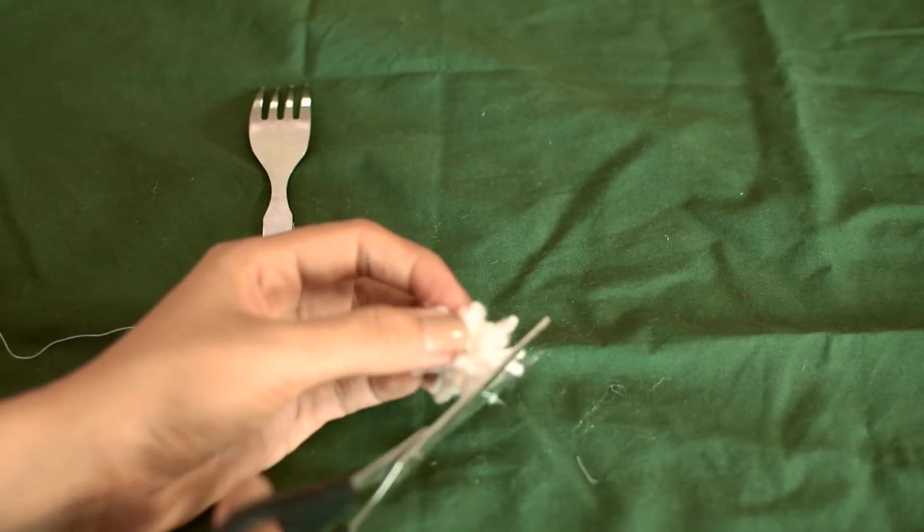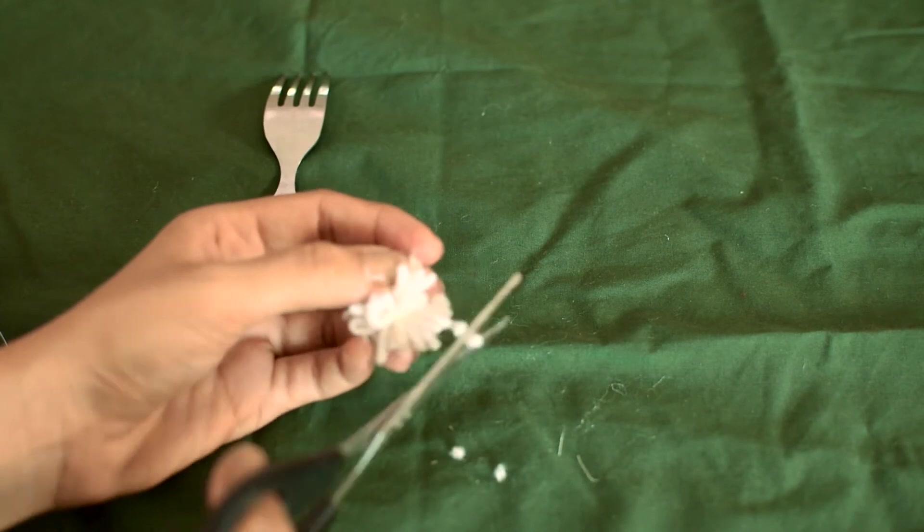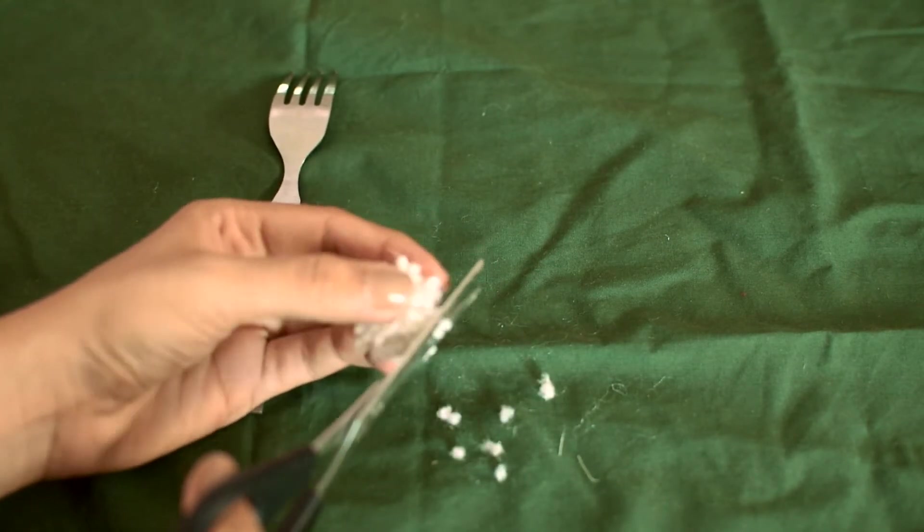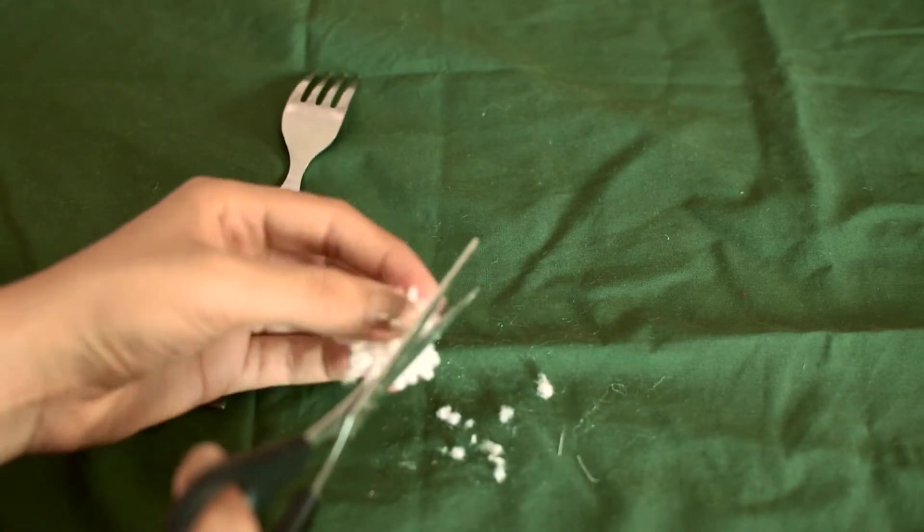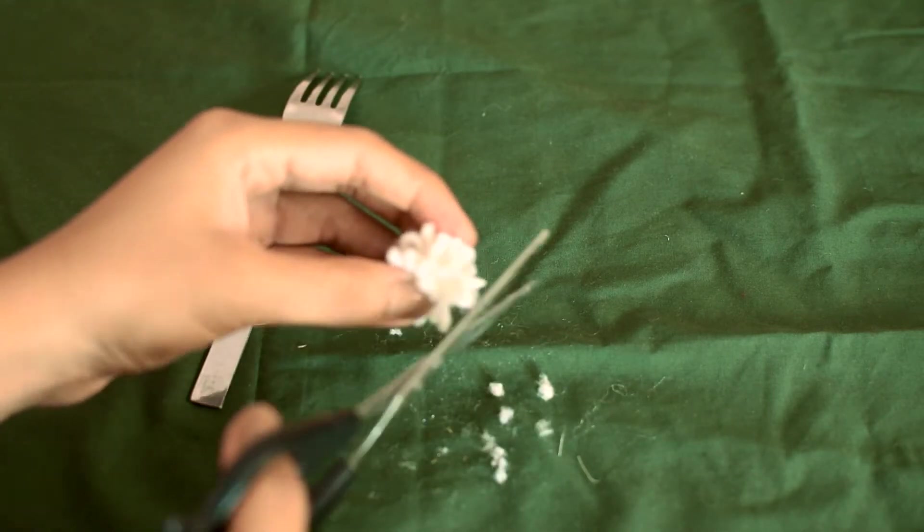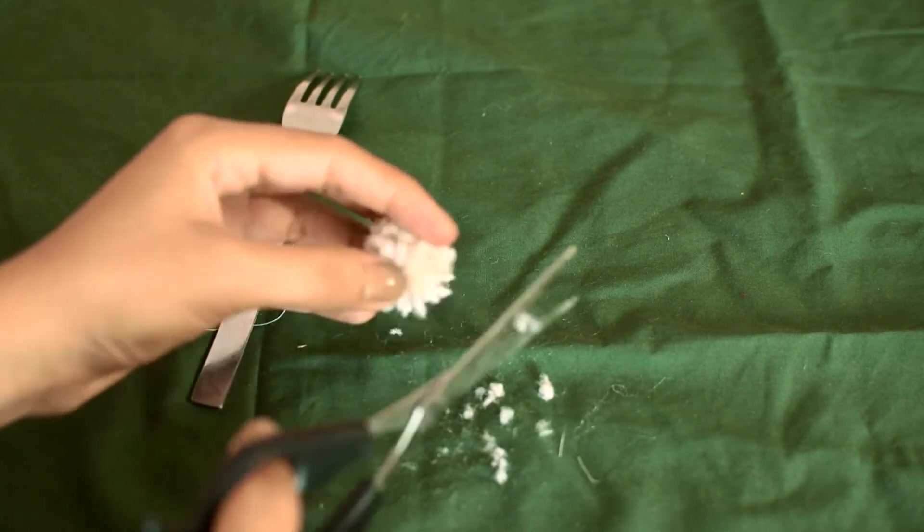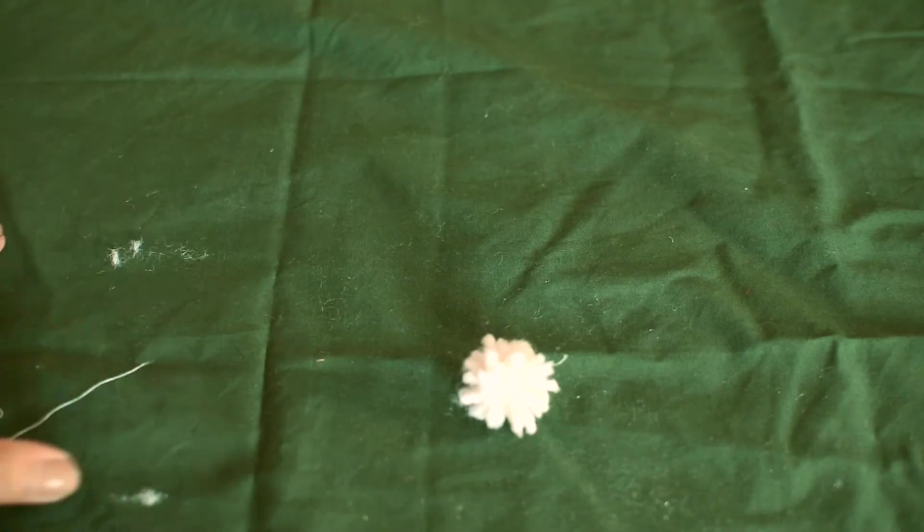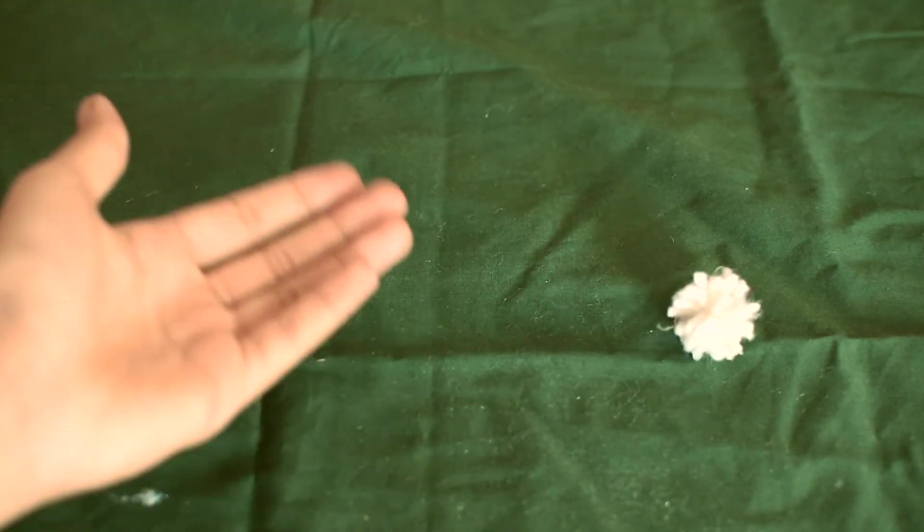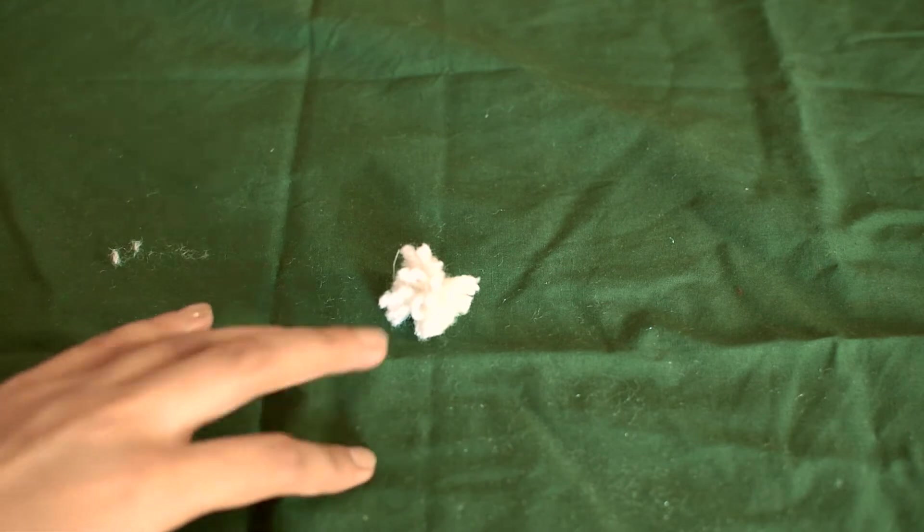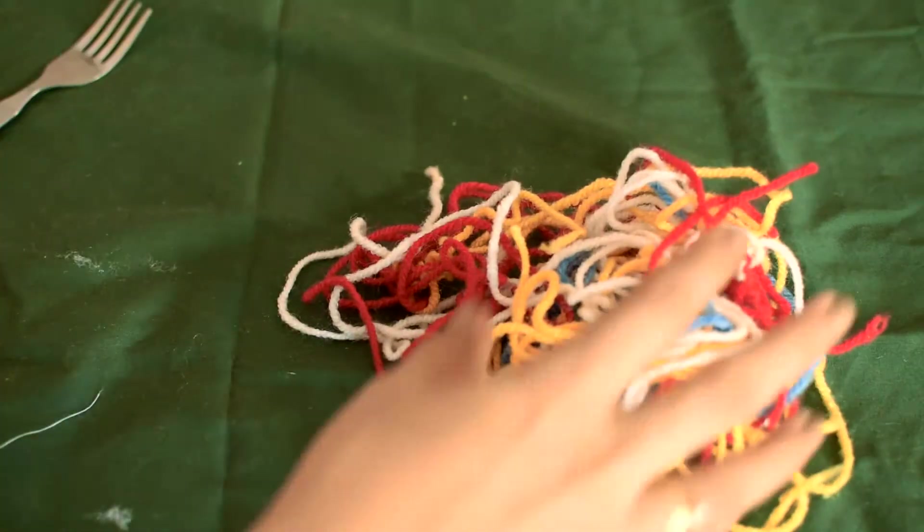Now this is the best part. All you have to do is just trim off the excess so that you can get more of a circular pom-pom look. Just keep trimming and trust me guys, this part was really therapeutic. I just loved trimming off the edges and there you go, you have your pom-pom.